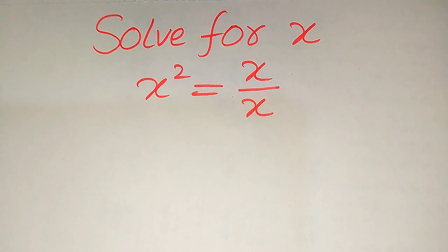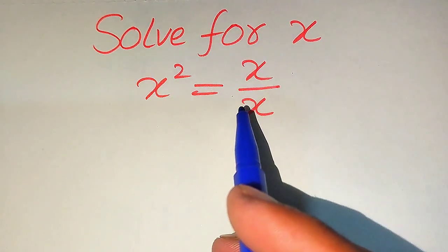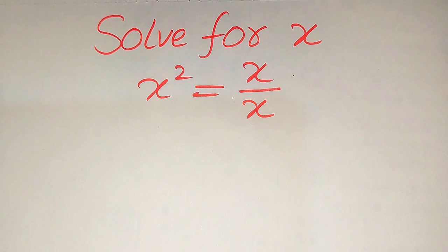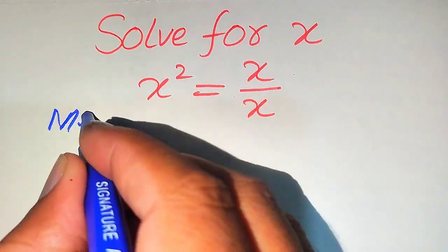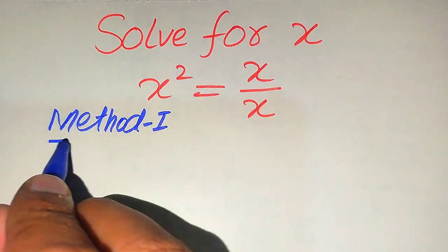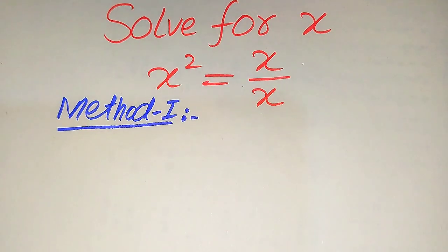Hello everyone. How to solve this problem: find the values of x if x squared equals x divided by x. First we find all the roots of this equation, and at the last we will verify which of the roots are sufficient and which are extraneous roots. We will solve this problem using two methods — please share any other method you know in the comment section.